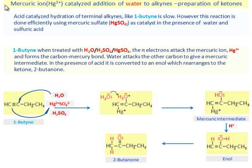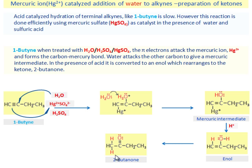Mercuric ion catalyzed addition of water to alkynes — Preparation of ketones. Acid catalyzed hydration of terminal alkynes like 1-butyne is slow. However, this reaction is done efficiently using mercuric sulfate as catalyst in the presence of water and sulfuric acid. When 1-butyne is treated with water, sulfuric acid, and mercury sulfate, the pi electrons attack the mercuric ion and form the carbon-mercury bond. Water attacks the other carbon to give a mercuric intermediate, which in the presence of acid is converted to an enol that rearranges to the ketone 2-butanone.